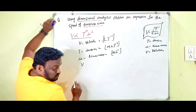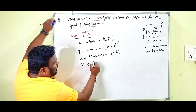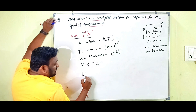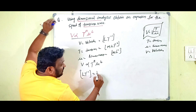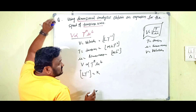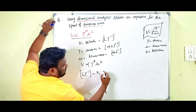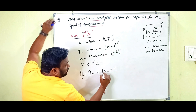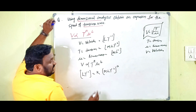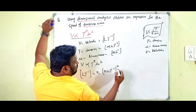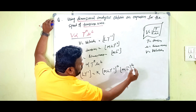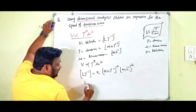So v proportional to T^a · μ^b gives us: LT⁻¹ equals k into (MLT⁻²)^a times (ML⁻¹)^b. Expanding the right-hand side, we get LT⁻¹ equals k · M^a · L^a · T^(−2a) · M^b · L^(−b).